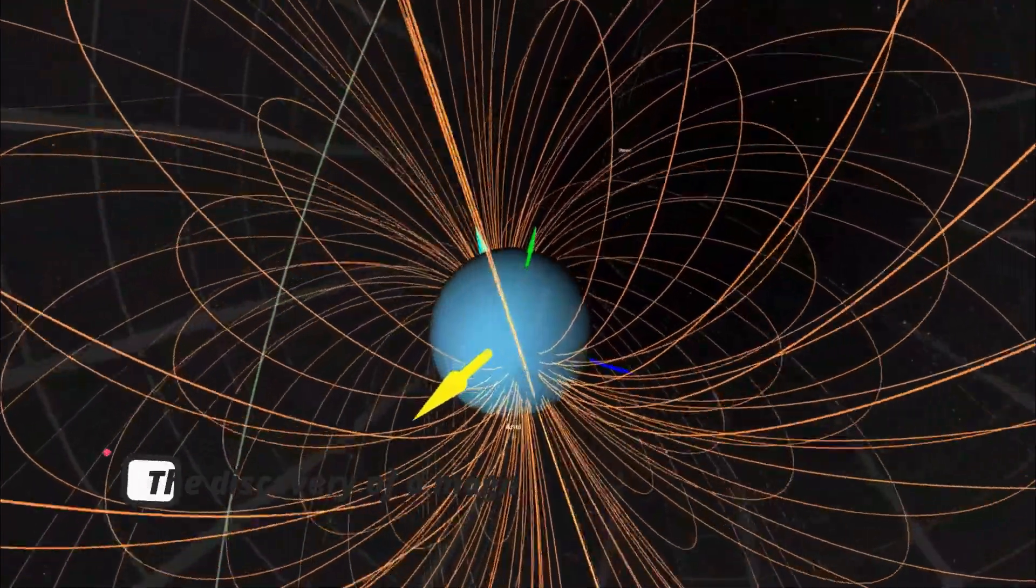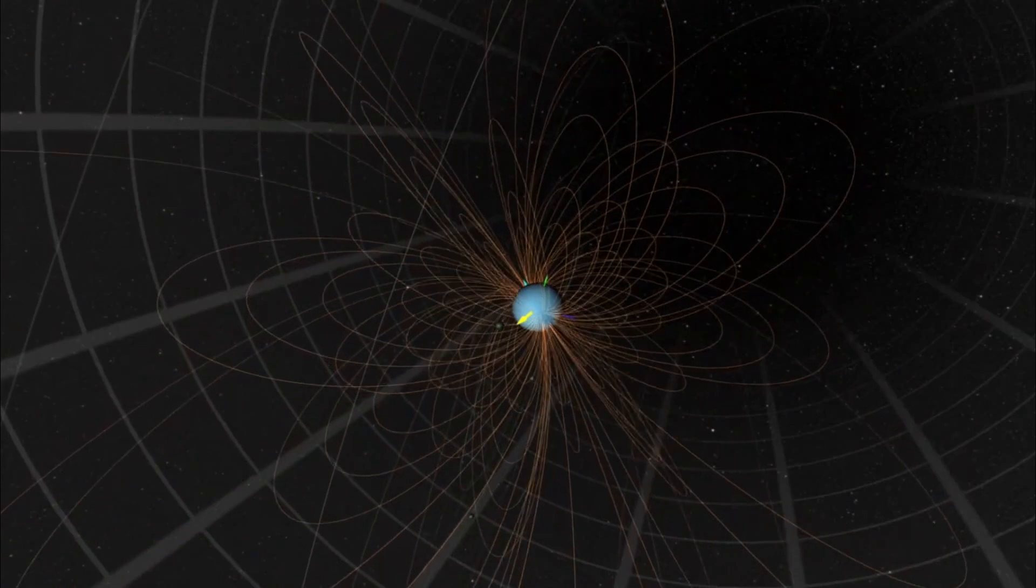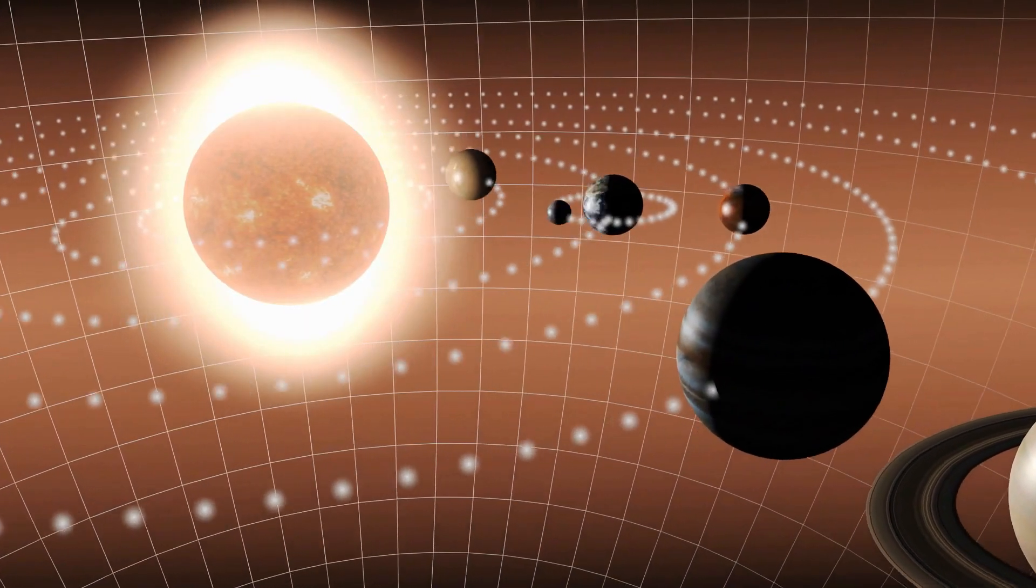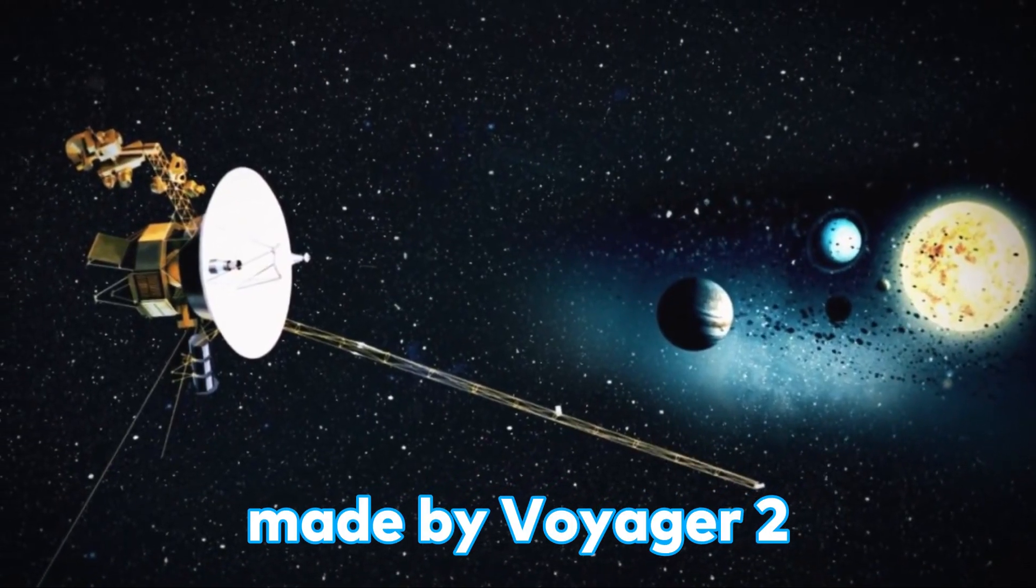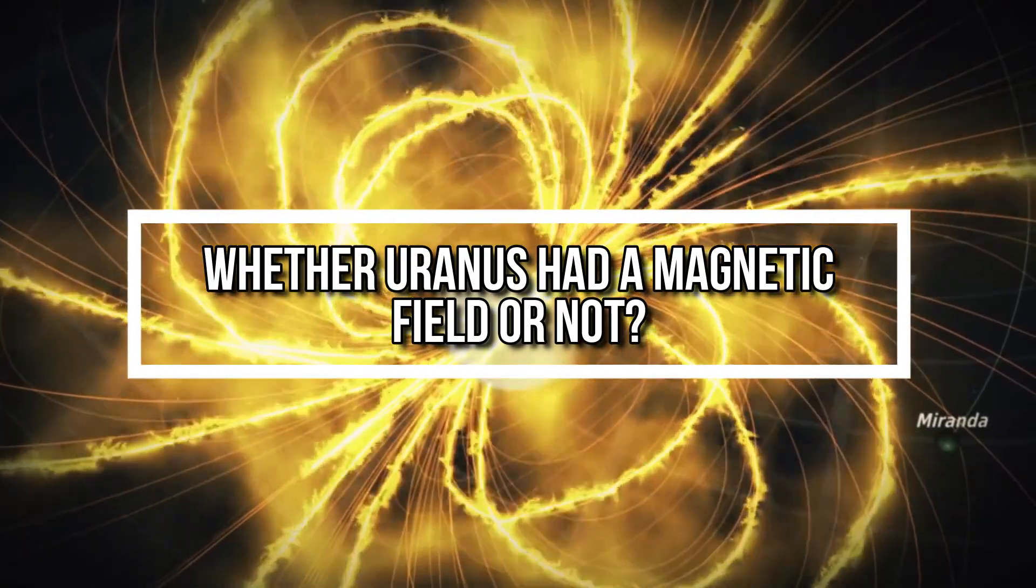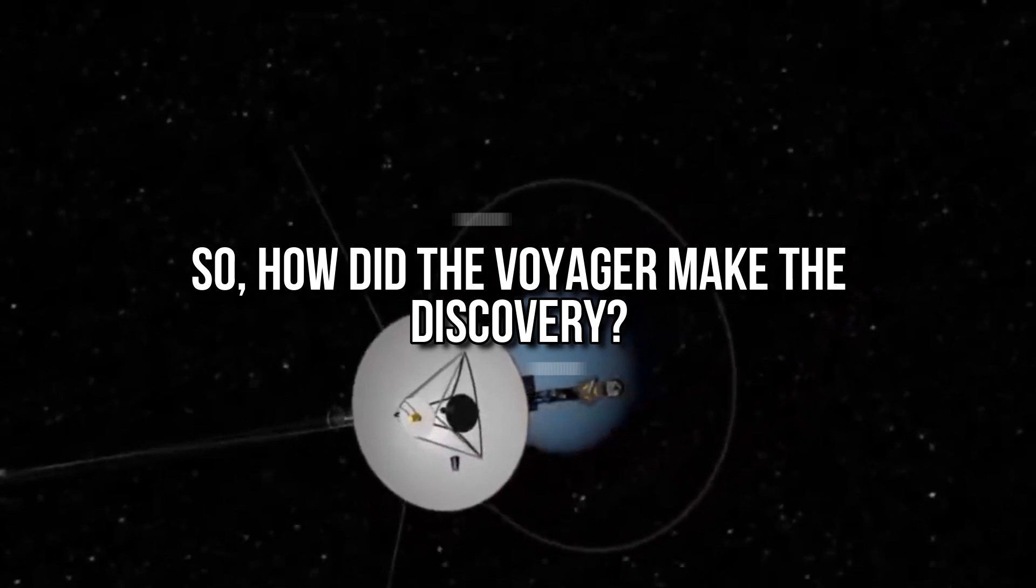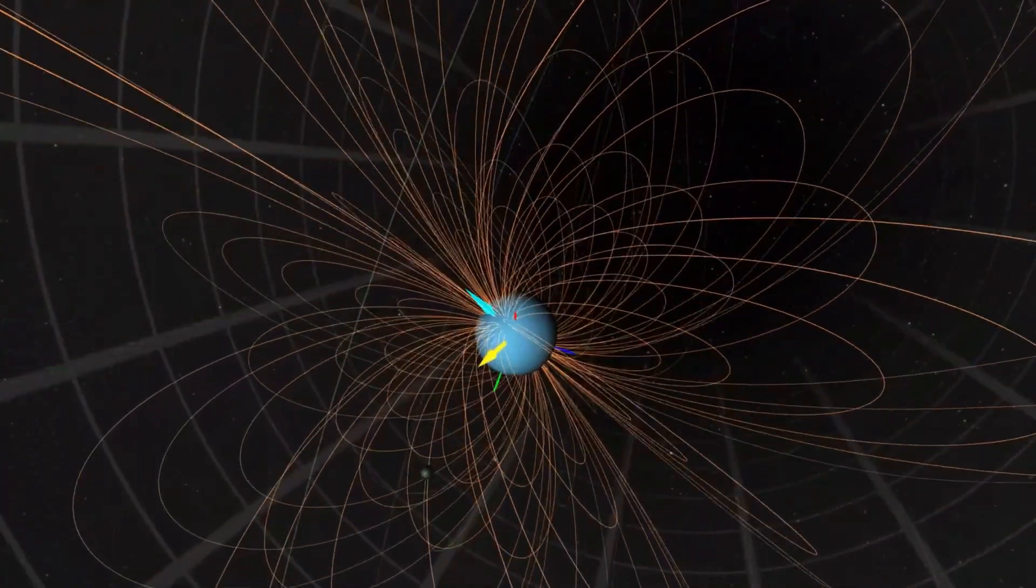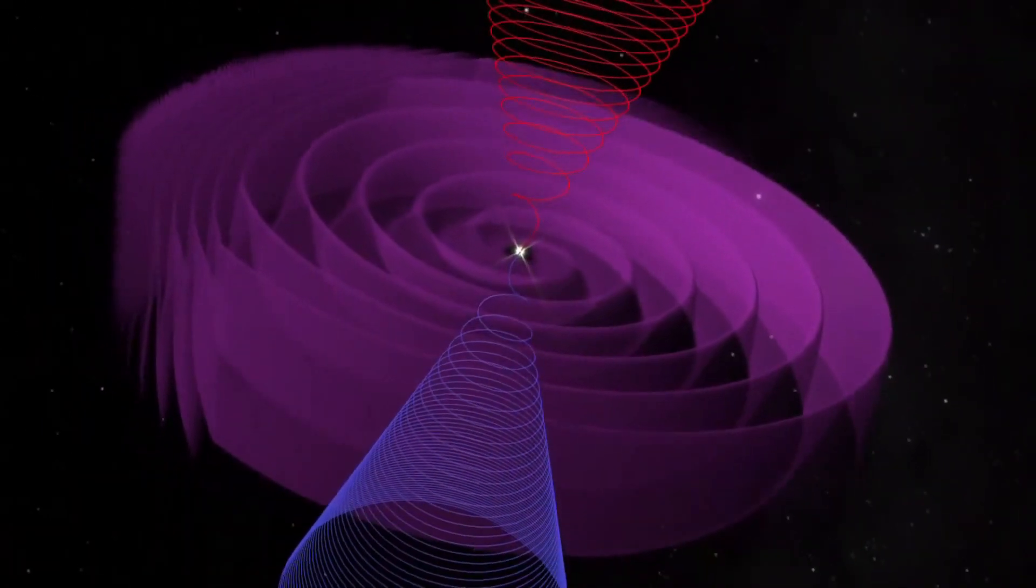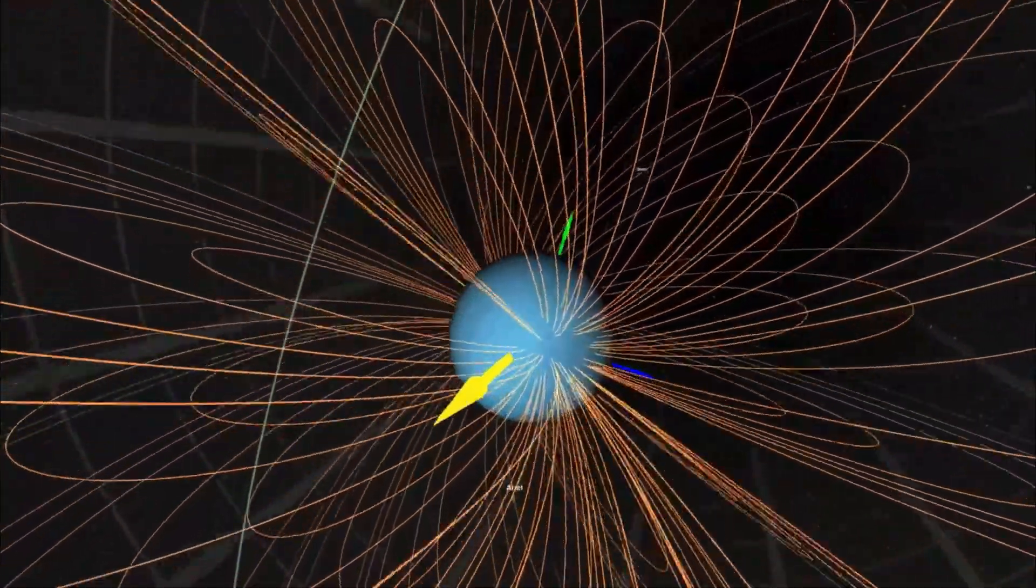Number 2. The discovery of a magnetic field around Uranus. The discovery of a magnetic field around Uranus was a significant moment in the exploration of the solar system made by Voyager 2 because before that, it was not known whether Uranus had a magnetic field or not and if it did, what its properties were. So how did Voyager make this discovery? The detection of a magnetic field around Uranus was made possible by the spacecraft's magnetic field instrument, which measured the strength and direction of the magnetic field surrounding the planet.